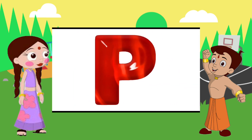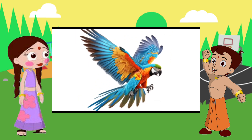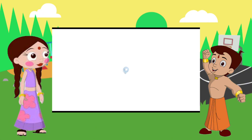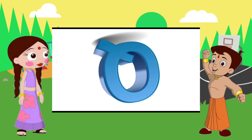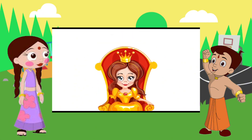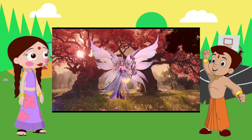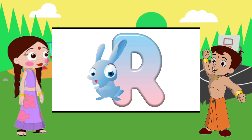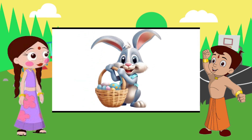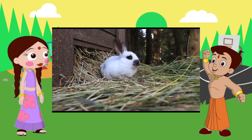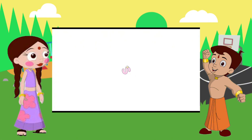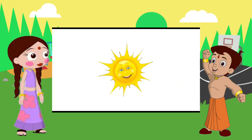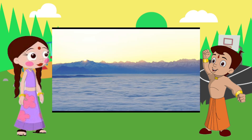P is for parrot. P-P-parrot, P-P-parrot. P-parrot. Q is for queen. Q-Q-queen, Q-Q-queen. Q-queen. R is for rabbit. R-R-rabbit, R-R-rabbit. R-rabbit. S is for sun. S-S-sun, S-S-sun. S-sun.